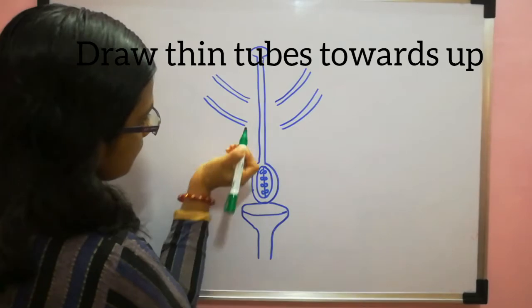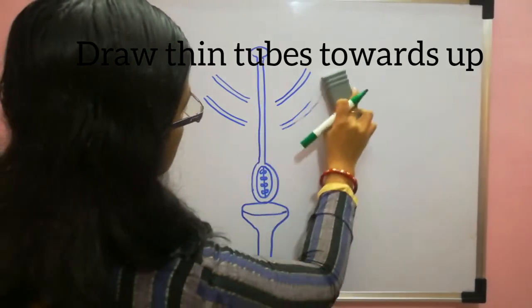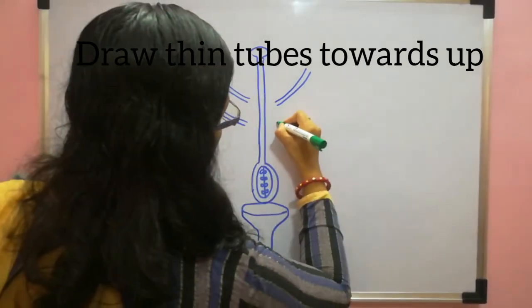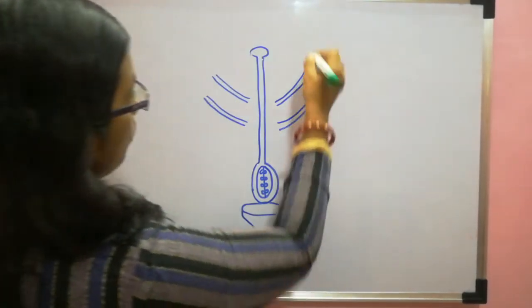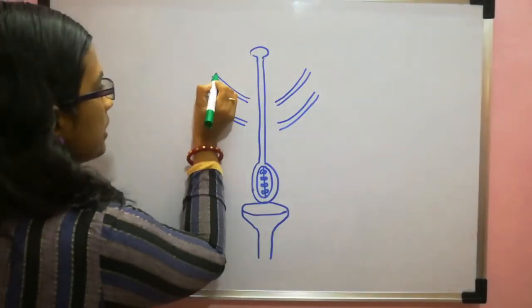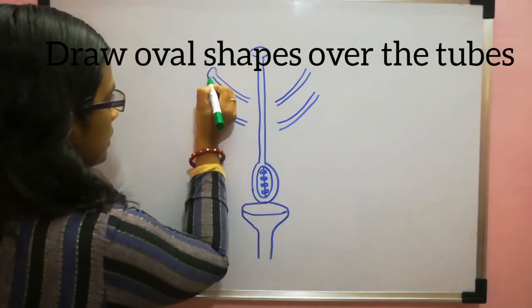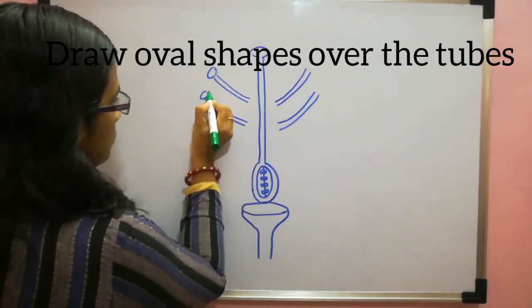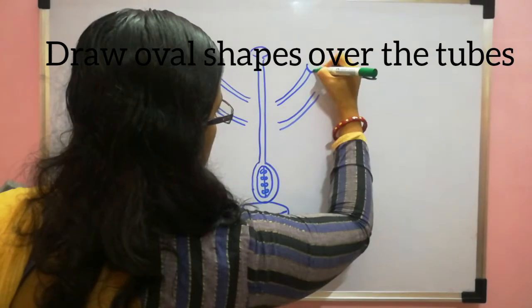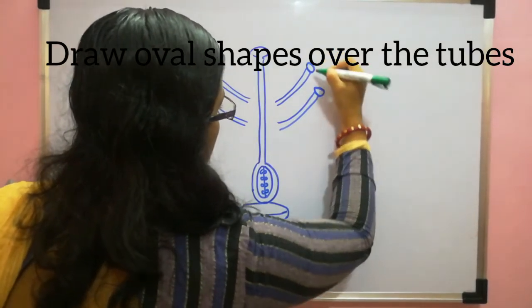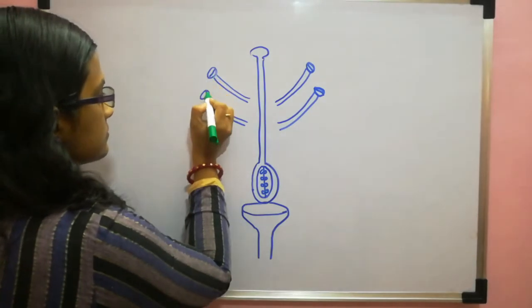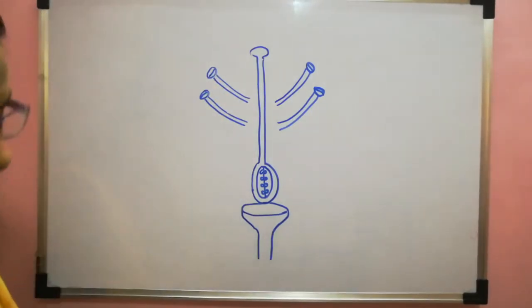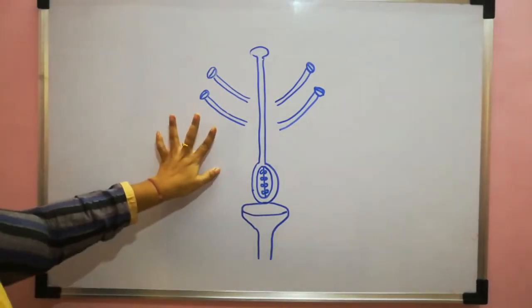Now over this you can make again oval shaped structure which is your anther. Flat oval. This shape structure. This is anther. And make it two nodes, divide it. Now your male reproductive part is also ready.